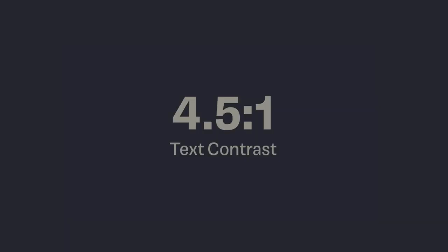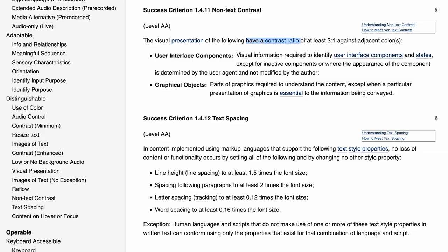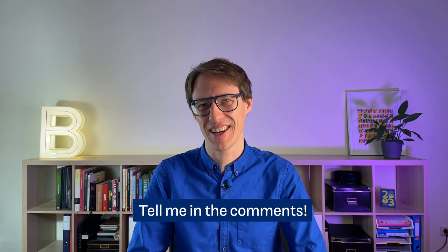I did a video about color contrast in buttons and totally missed something that you probably don't know either. To meet web accessibility standards, not only the text — the button itself needs to have a minimum contrast against its background. I thought this was only about text contrast. If this is news to you as well, tell me in the comments below.